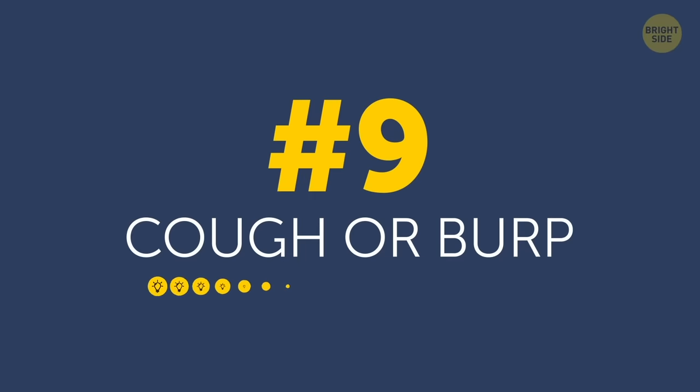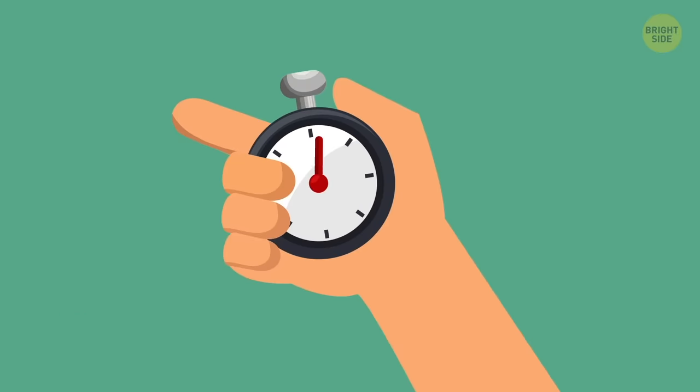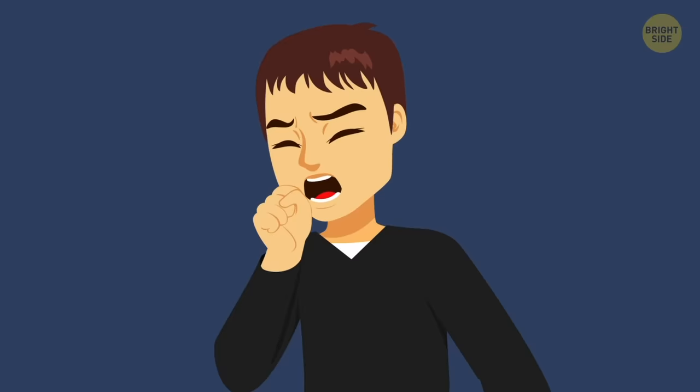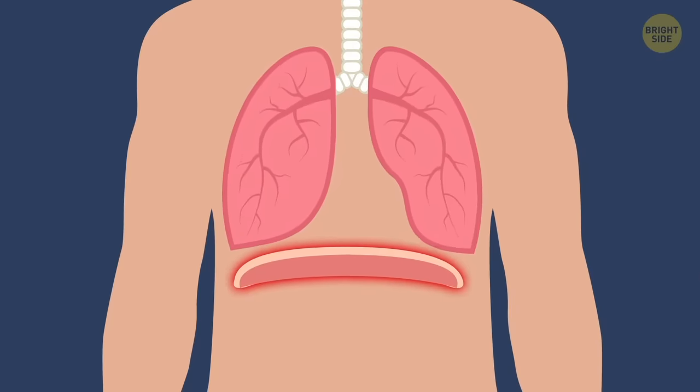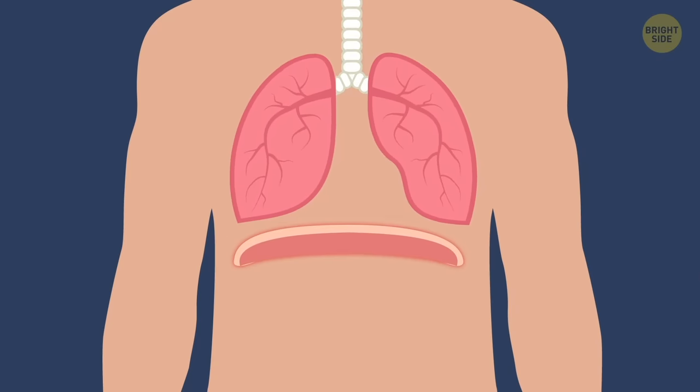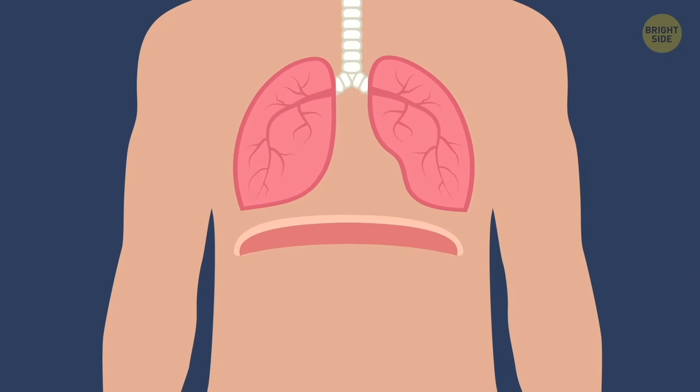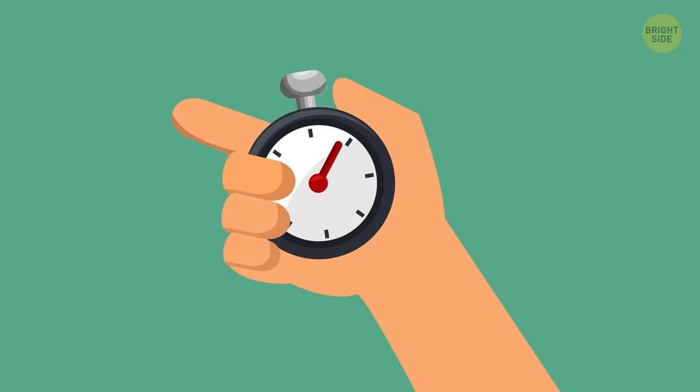Cough or burp. Choose your weapon wisely. Try to count how many seconds there are between your hiccups. When you anticipate the next one, cough or make yourself burp. This will cause your diaphragm and the muscles around it to start working in a different way, which will interrupt your hiccup pattern. Repeat until your hiccups are gone.